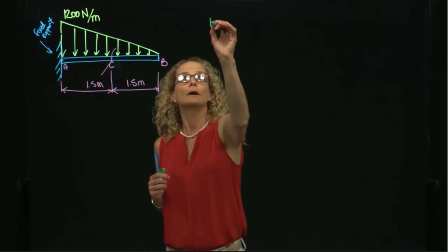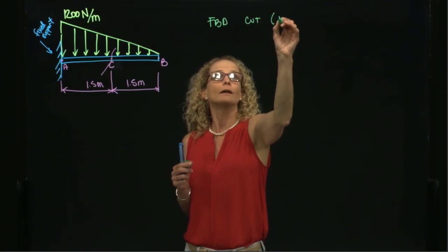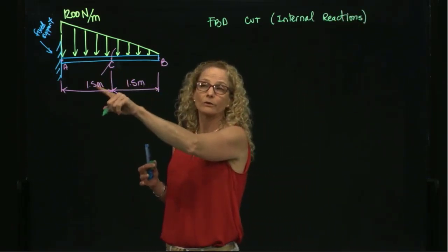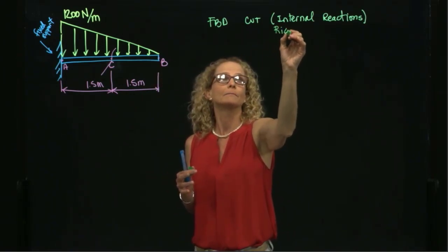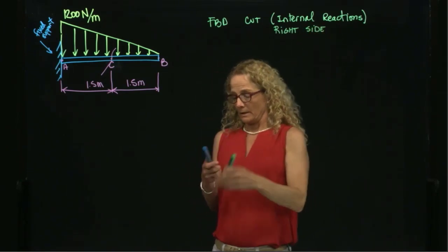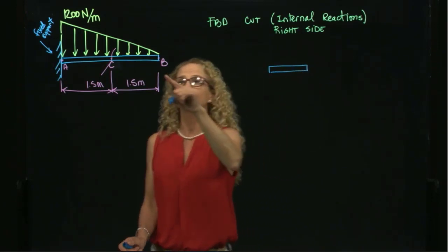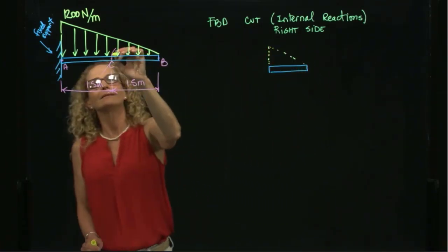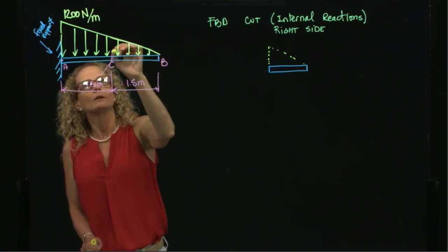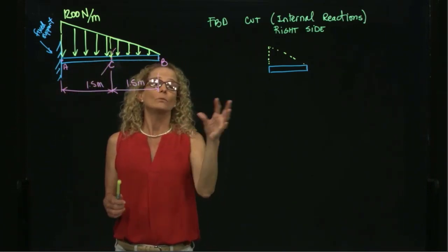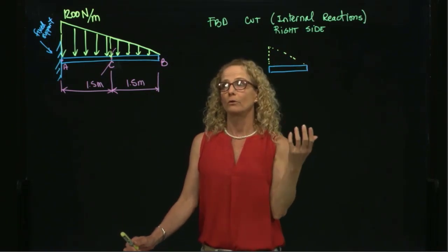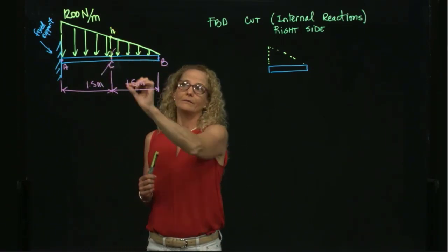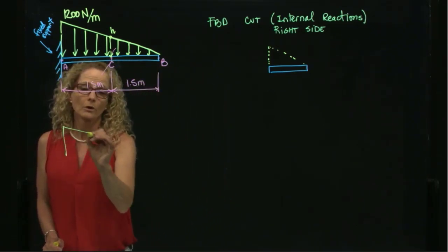I will do it from the right side. So I will draw my little piece of beam from B to C. In this case, the distributed force will act over this little piece from here to here. I need to find what the concentrated load will be for that little piece of distributed load.